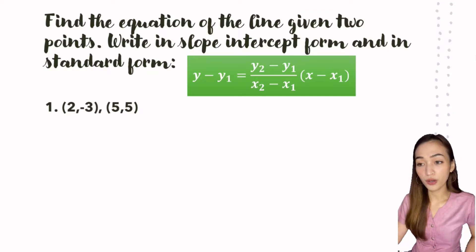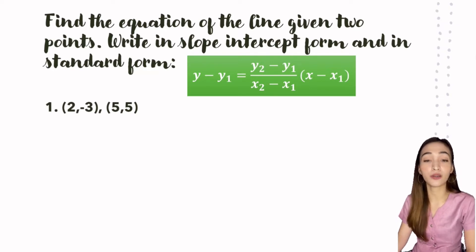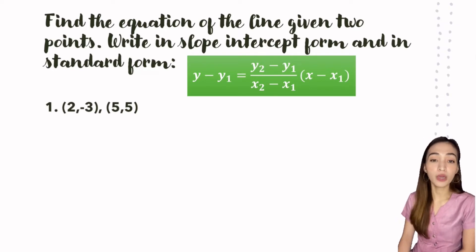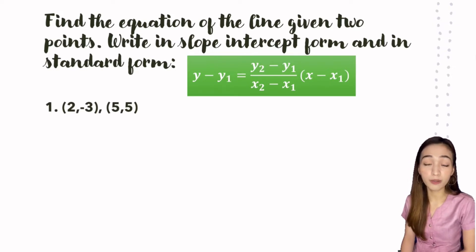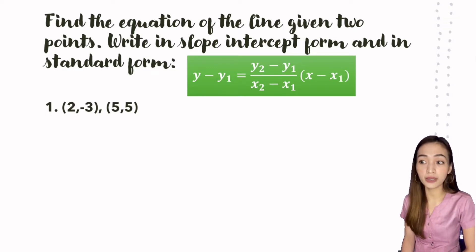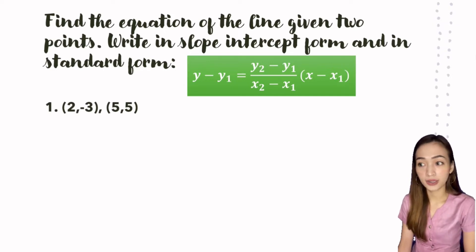So we have here, for example, find the equation of the line given two points, written in slope-intercept form and in standard form. We have here the formula: y minus y-sub-1 equals (y-sub-2 minus y-sub-1) over (x-sub-2 minus x-sub-1), times (x minus x-sub-1).